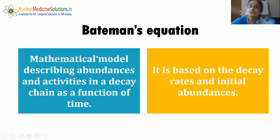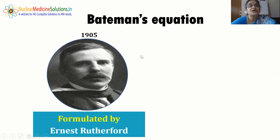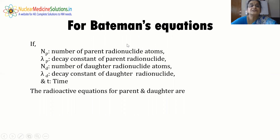For Bateman's equation: it is the mathematical model describing abundances and activities in a decay chain as a function of time, based on decay rates and initial abundances. It was first formulated by Ernest Rutherford in 1905, and the analytical solution was provided by Harry Bateman in 1910. Key terms: N_P and λ_P are the number and decay constant of parent radionuclide atoms; N_D and λ_D are those of the daughter radionuclide; and t stands for time.